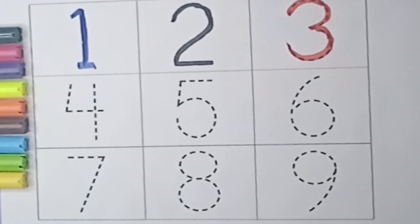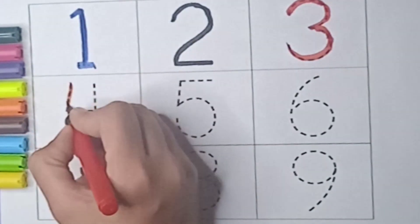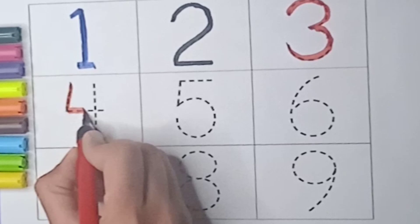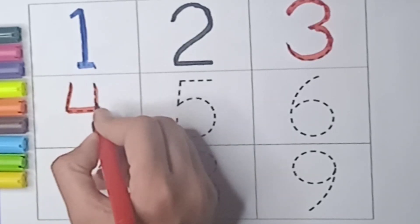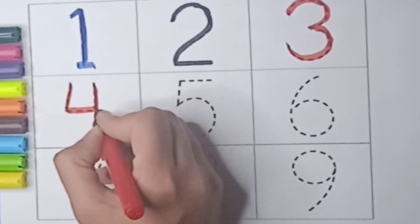Next number is 4, red color. Standing line, now sleeping line, again standing line. It's 4. Say 4.